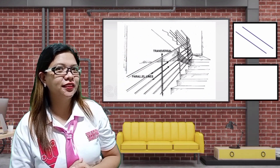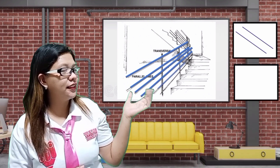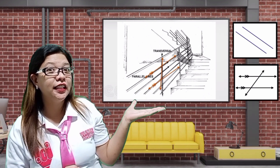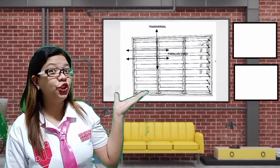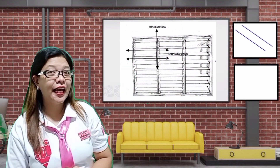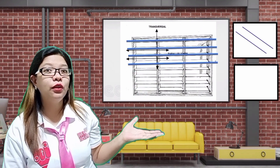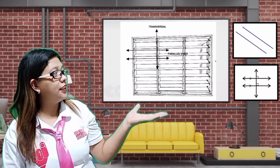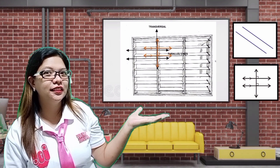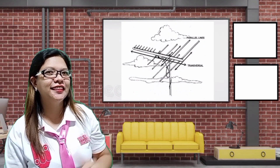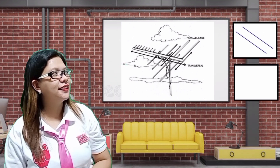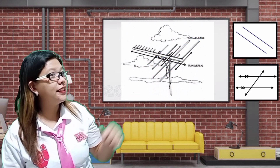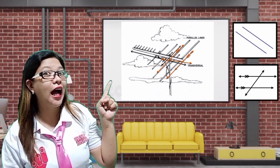Here is a staircase — those are parallel lines. Now I have here a window with jalousie. Those are the parallel lines in the window, and here is the transversal line in the window. Lastly, we have an outdoor antenna — that is a parallel line, and here are the parallel lines and transversal in the antenna.